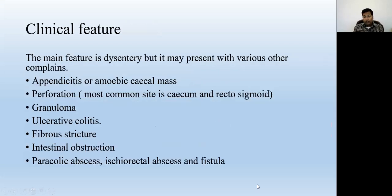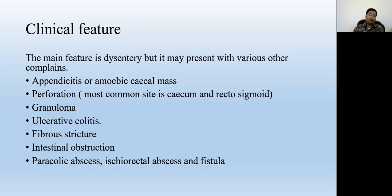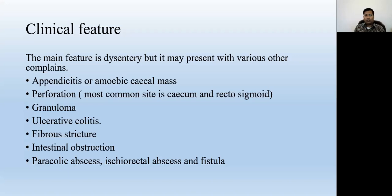The main clinical feature of amoebiasis is dysentery — the patient passes loose stool multiple times along with tenesmus and urgency. Sometimes the patient may pass blood along with loose stool. The presentation may also include a mass, just like an appendicular mass, because the most commonly affected part of the bowel is the cecal area. If the cecal area is inflamed, it presents as a cecal mass similar to appendicitis.